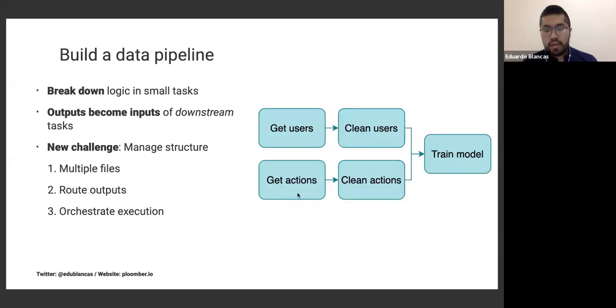What's the solution? If we want maintainability and structure, we build a data pipeline, breaking down the big notebook into smaller tasks. Instead of having a thousand cells, we have a task which gets users data, maybe actions performed by those users, then we clean those data sets, and at the end we train a model. The basic idea is that the output from some task becomes the input for the next set of tasks.